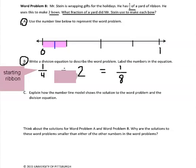The two is the number of bows he makes with the one-fourth yard of ribbon. And our answer, one-eighth, is the amount of ribbon in each bow.